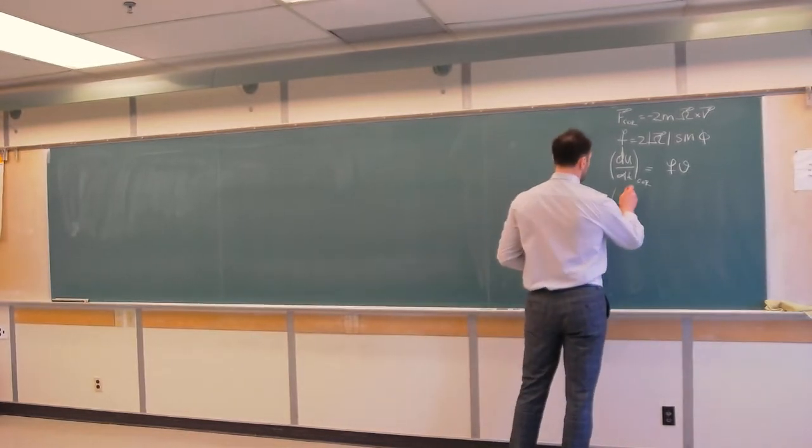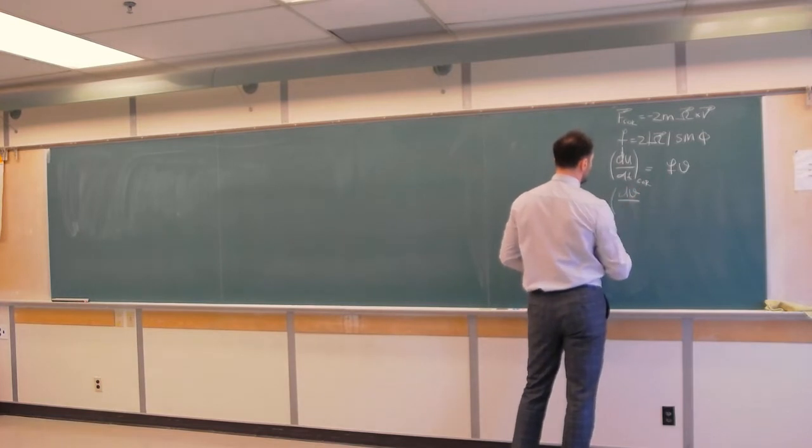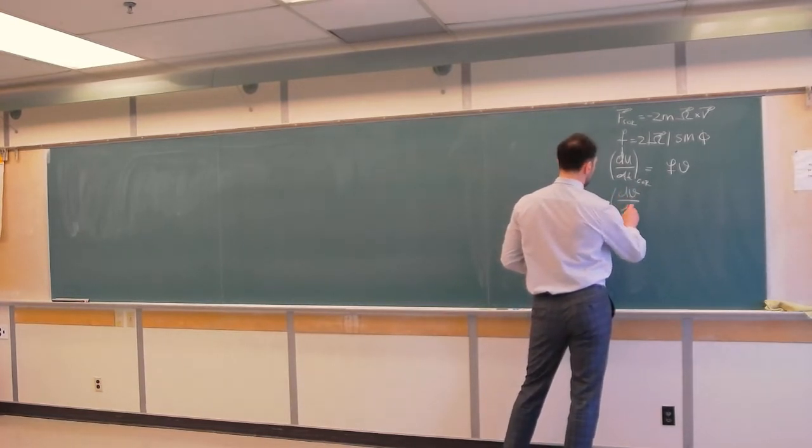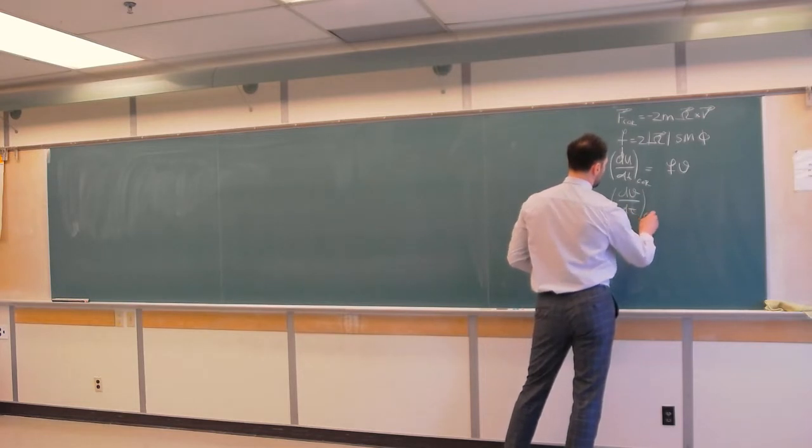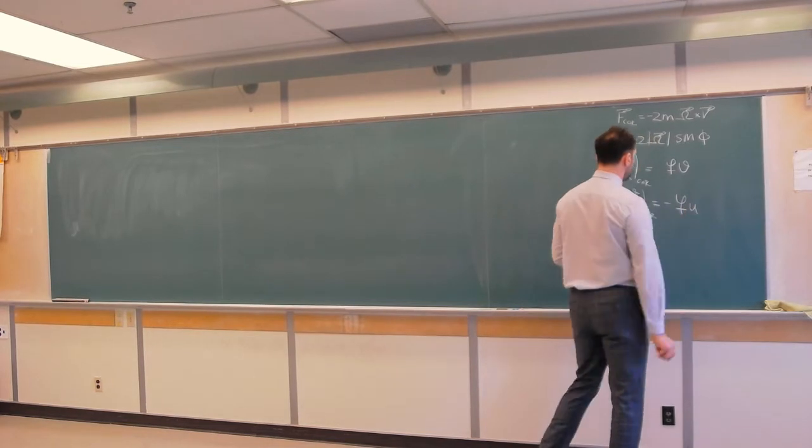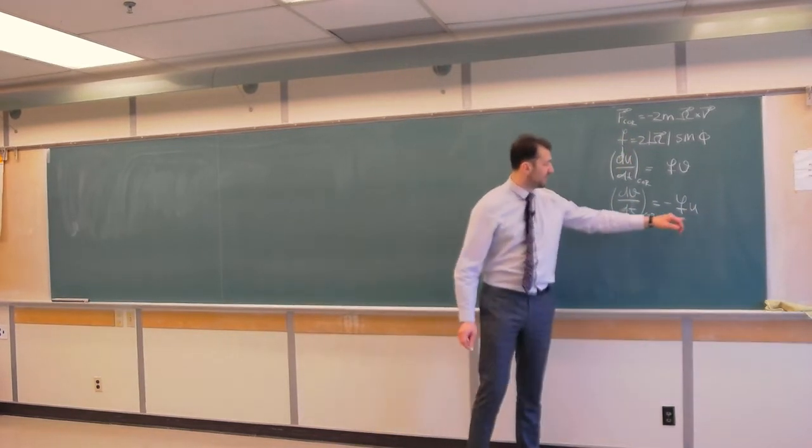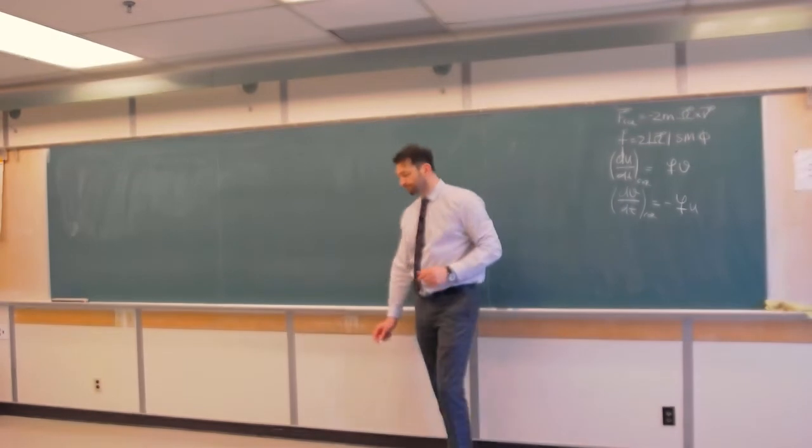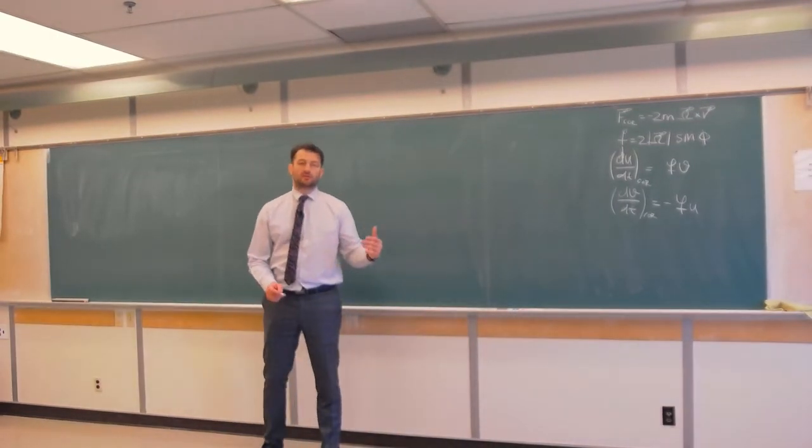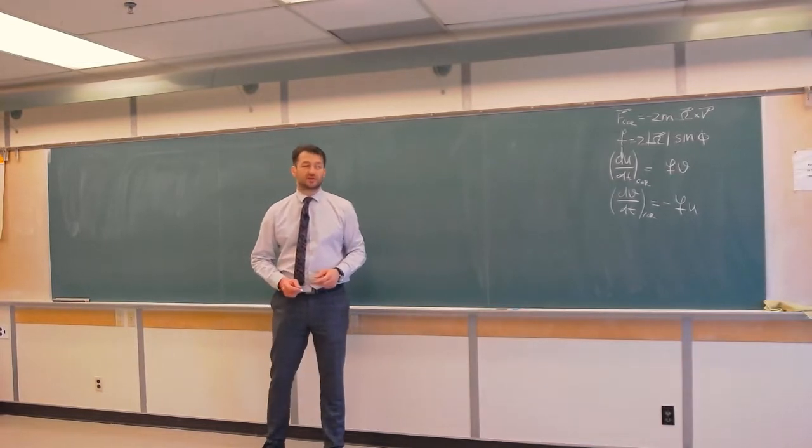And lastly, we also have acceleration in the meridional direction, dv dt due to Coriolis force is equal negative Fu, where again F is Coriolis parameter, and u is component of wind from west to east, positive eastward.